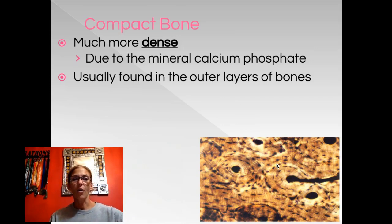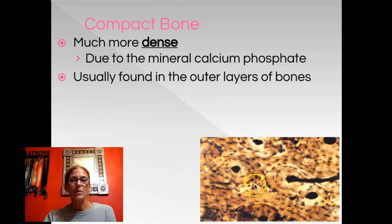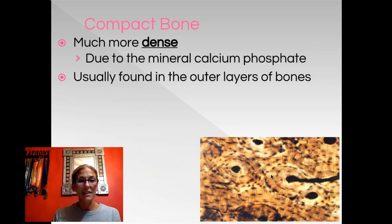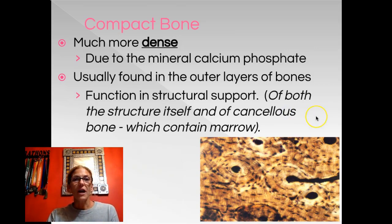Compact bone protects the whole bone — the organ itself. Bones are organs because they're made up of several different types of tissue. It's also going to protect the other type of tissue we're going to talk about: cancellous tissue, or spongy bone, which is where bone marrow is made. We want to protect that so we can keep making blood. The job of compact bone is really for support, structure, and protection.